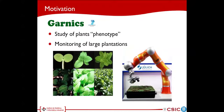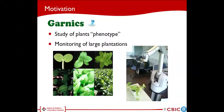The Garnix project tries to develop more versatile tools for improving plant monitoring over large plantations. This is achieved by placing the sensors on a robotic arm as shown in the pictures.